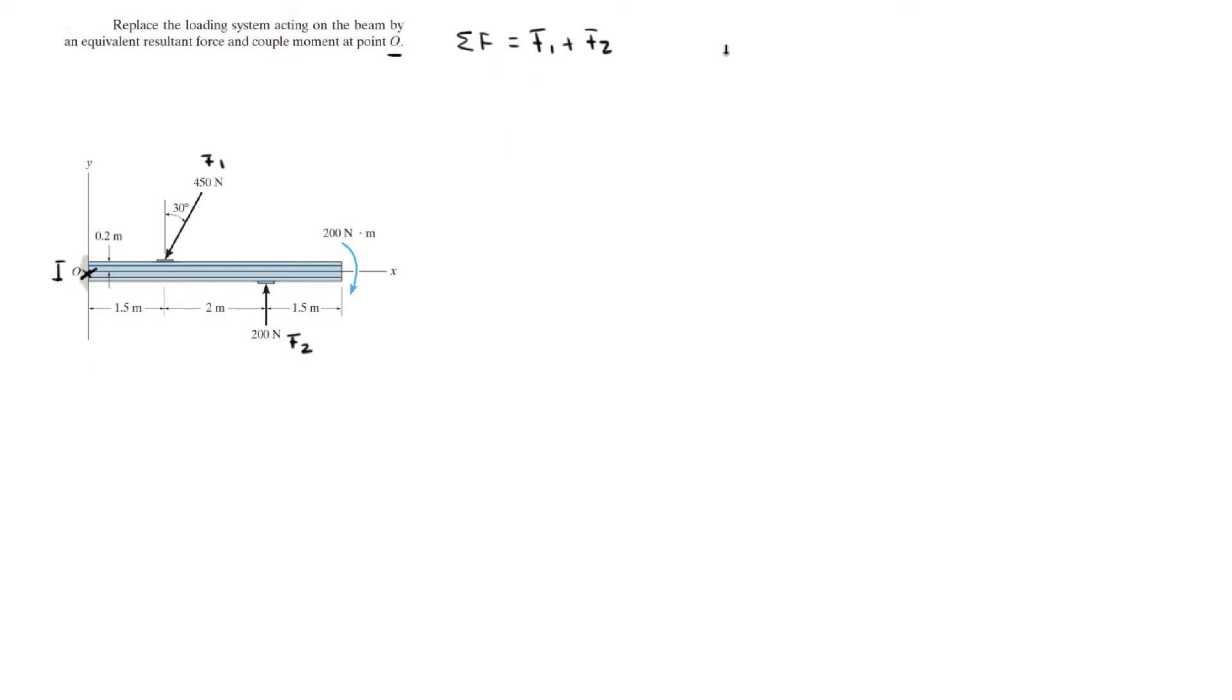So, let's find the Cartesian vector form of F1. F1 has an X component and a Y component. The X component is this component and the Y component is this component. Pretend that's a straight line. And then, you know that the X is given by the magnitude times the sine of 30 degrees.